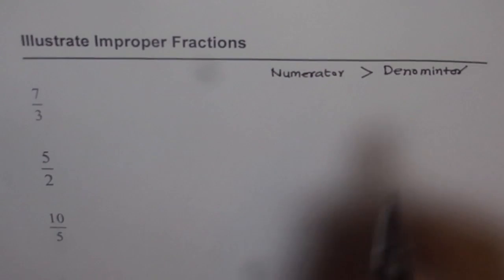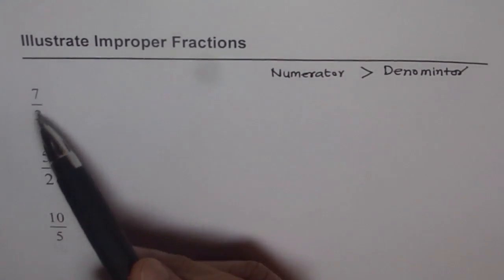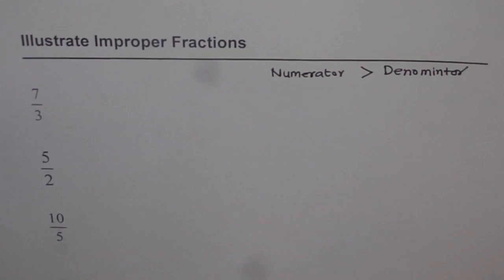They are fractions, of course, since they have a numerator and a denominator. But numerator is greater. It means the numbers are actually not smaller than 1, but bigger than 1.